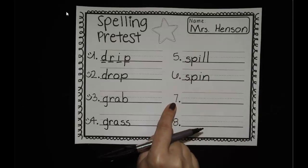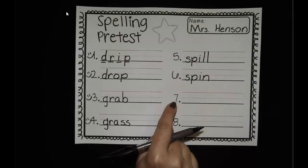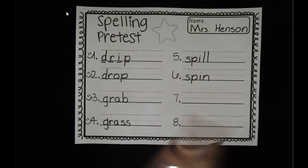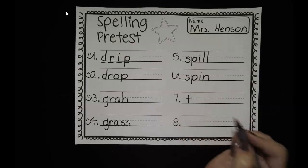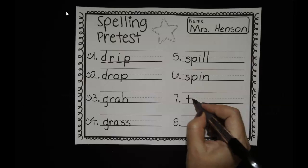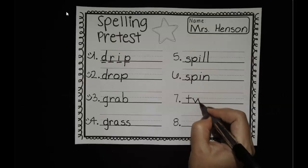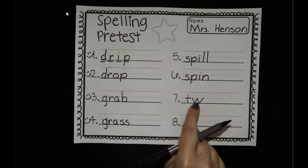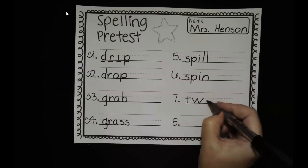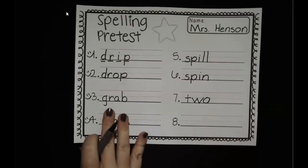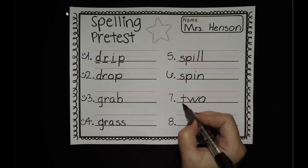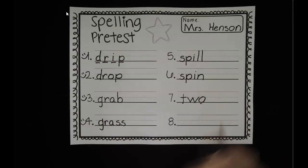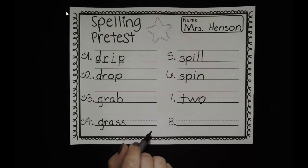Number seven is tricky — it is the number two. We've been writing the word 'to,' like 'I wrote this to my friend,' but this kind of two is the number. It does start with that T, but there's a letter that's silent in the middle — a W. T-W-O. Isn't that funny? So this kind of two still has the T, still has the O, but we put a W in the middle. Two.